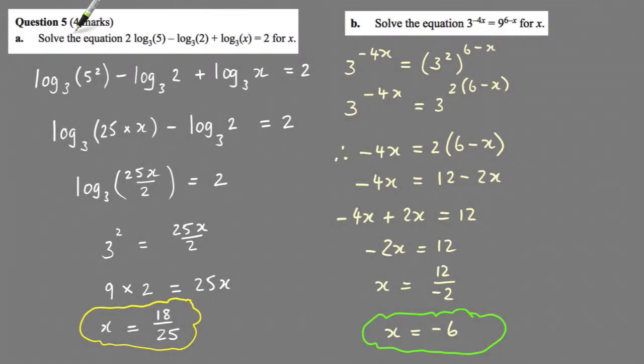Question 5 part a: Solve the equation 2 log to the base 3 of 5 minus log to the base 3 of 2 plus log to the base 3 of x equals 2 for x. So you've got to figure out what x is equal to.